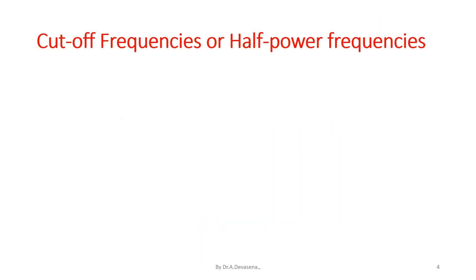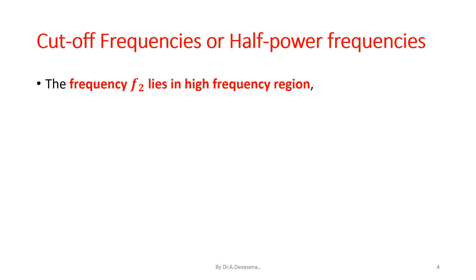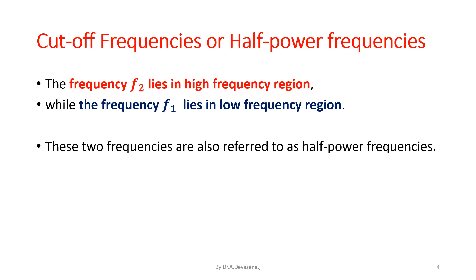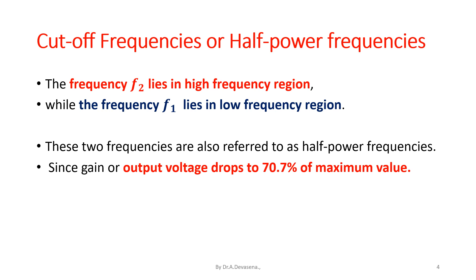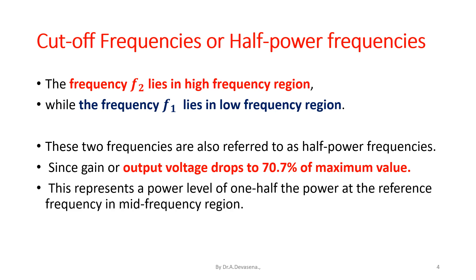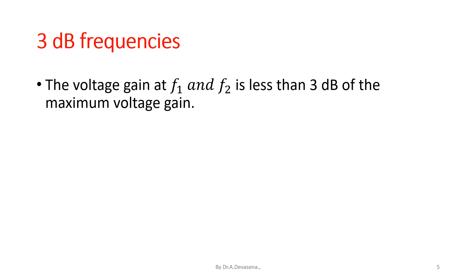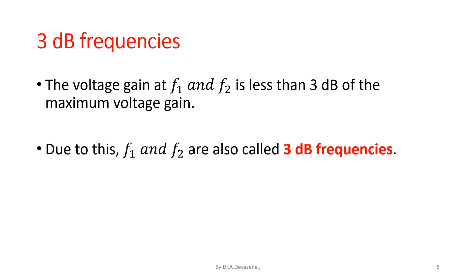Cutoff frequencies are also called half power frequencies. The frequency F2 lies in the high frequency region, while the frequency F1 lies in the low frequency region. These two frequencies are referred to as half power frequencies since gain or output voltage drops to 70.7% of maximum value, representing a power level of one half the power at the reference mid-frequency. The voltage gain at F1 and F2 is less than 3 dB of the maximum voltage gain, so F1 and F2 are also called 3 dB frequencies.